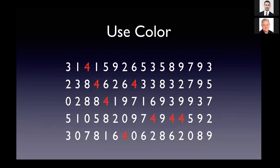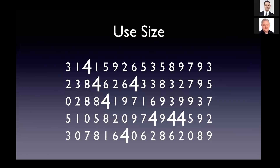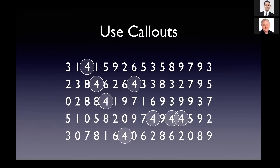But if I use pre-attentive attributes in the design — and here I'm going to use color and make those fours jump out at you — there are eight fours in the block of numbers. By using color and that pre-attentive attribute, you as the observer naturally gravitate to that. Another version of color is opacity — we can make our data stand out as the main point of focus, while the reference data that provides context is made semi-transparent or darker in the background. We can also use size — in this case making all the fours bigger — or we can use very explicit call-outs and circle every four. That makes it really quick and easy for your audience to find the data you're talking about.